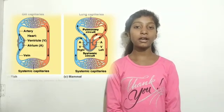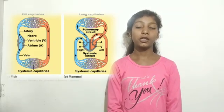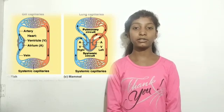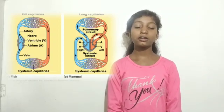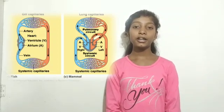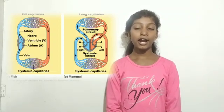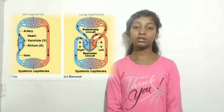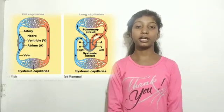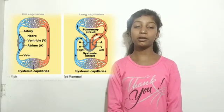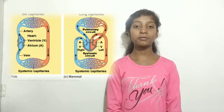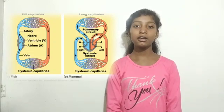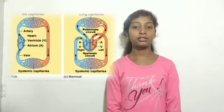Circulation is of 2 types. One is single circulation and one is double circulation. In single circulation, the blood passes through the heart only once. For example, in fish, the blood passes through the heart only once, so it is called single circulation.